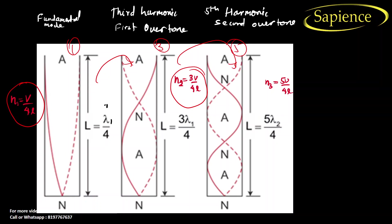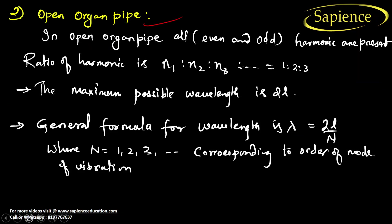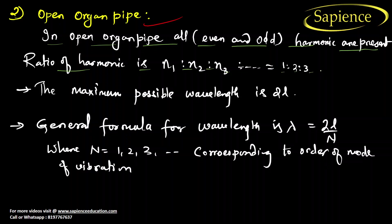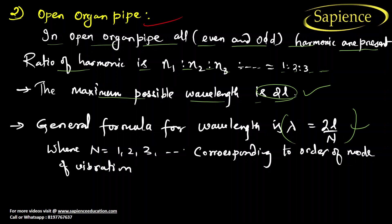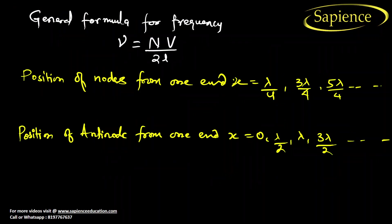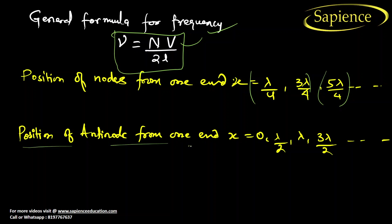For an open organ pipe, both even and odd harmonics are present. The ratio of harmonics is 1 : 2 : 3 and so on. The maximum possible wavelength is 2L. The general wavelength formula is lambda = 2L/n, where n = 1, 2, 3… For example, the fourth harmonic gives lambda = 2L/4. The general frequency formula is f = nv/(2L). Node positions from one end: lambda/4, 3lambda/4, 5lambda/4… Anti-node positions: 0, lambda/2, lambda, 3lambda/2…